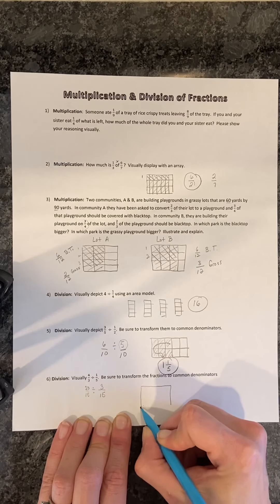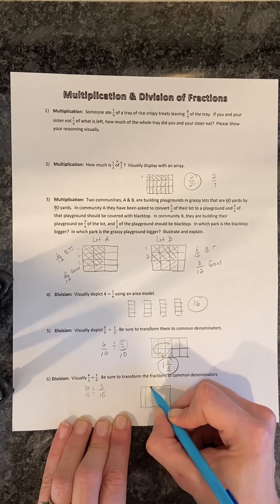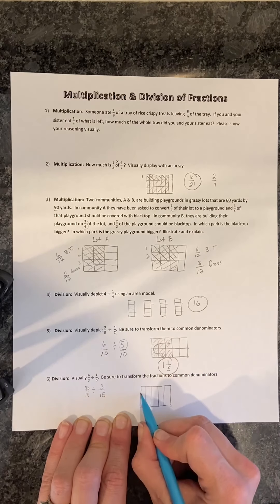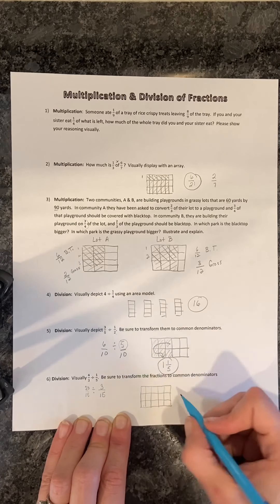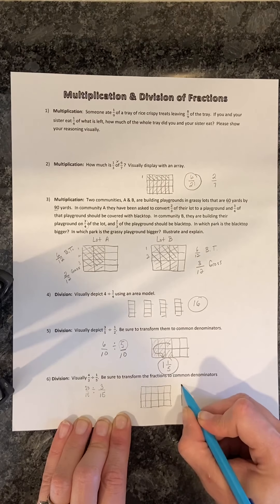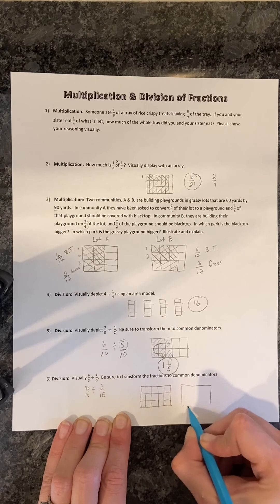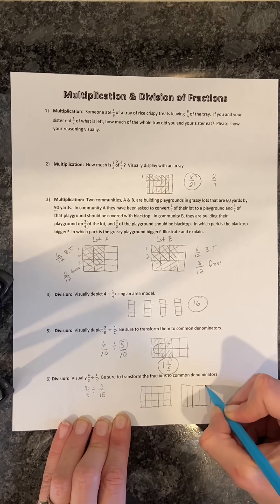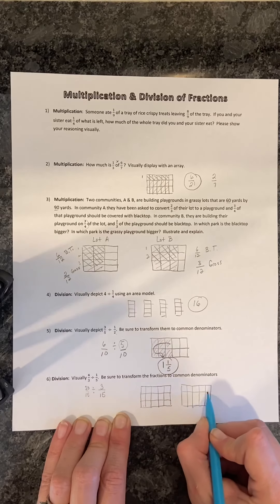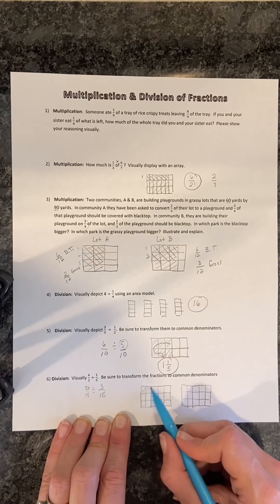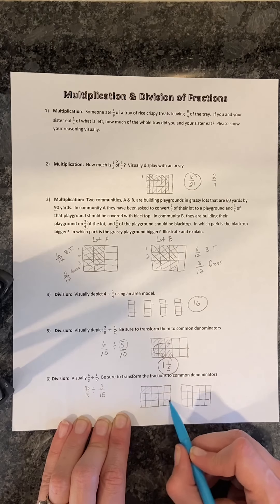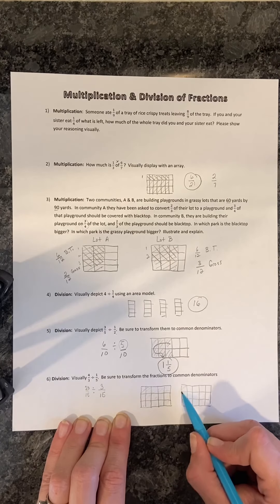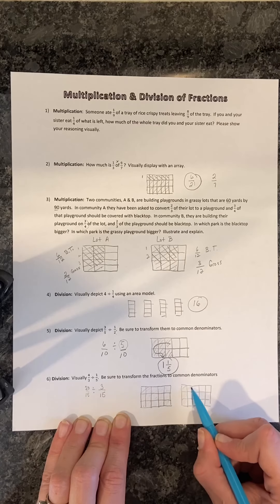So the first thing we do is we depict 20-fifteenths. So I'm going to go ahead and draw two rectangular arrays. And however you want to depict these, you can. Again, you might choose to reverse your rows and columns. Not a problem. But we'll go ahead and we'll shade in 20 of these. So we shade in all 15 here. And then we will shade in another three here, but then just two here.